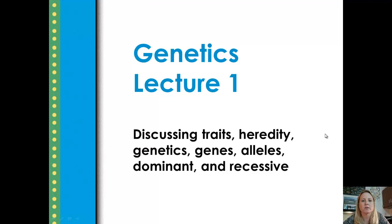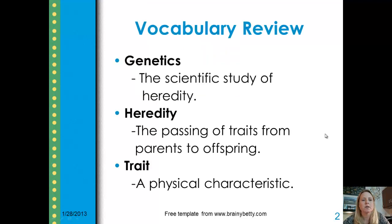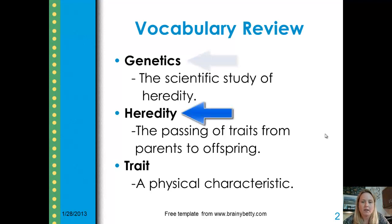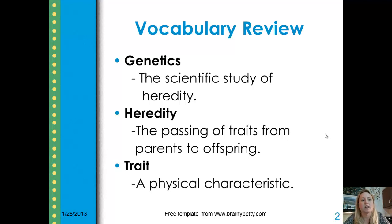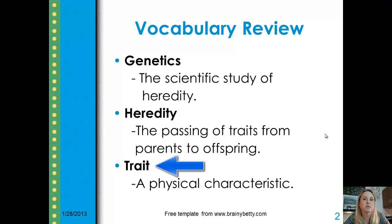We're going to start with just some simple vocabulary terms. Genetics, the name of our unit, is the scientific study of heredity. Heredity refers to the passing of traits from parents to offspring. Your DNA and the genes contained within come from your parents — you get half from your mother, half from your father. For example, I have blue eyes, which I inherited from my mother. Maybe you have heard someone say you have your father's smile or your mother's hair. These physical characteristics, like eye color, are traits.